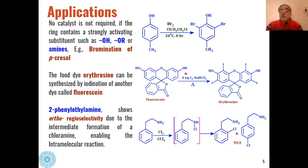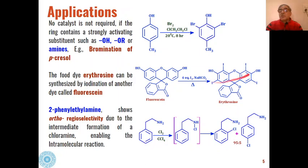Only four equivalents of iodine are added — no catalyst is required. There are four ortho positions with respect to the phenolic groups in fluorescein, numbered one, two, three, and four. At all four of these positions, hydrogen is substituted by iodine, giving the tetraiodinated erythrosine product.